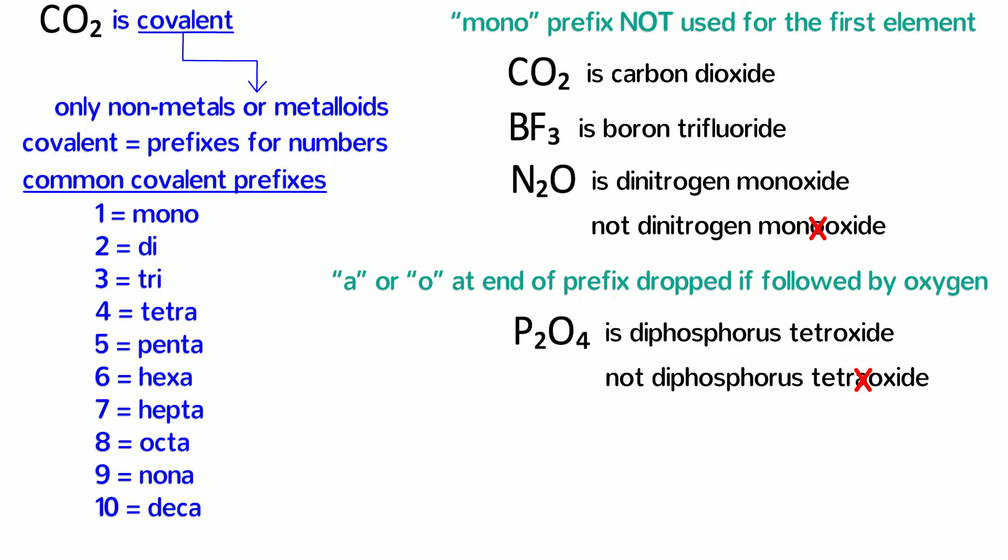Let's try a couple more. How would you name B2S3? Yes, diboron trisulfide. And what is the formula of arsenic pentachloride? That's right, AsCl5. As long as you know the prefixes, you can name any binary covalent compound.